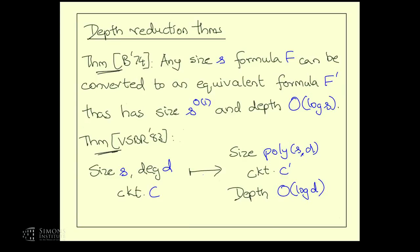There's an analogous theorem for circuits, due to Valiant, Skyum, Berkowitz, and Rackoff from the eighties. If you have a size-S circuit computing a degree-D polynomial, you can convert it into an equivalent circuit of size polynomial in S and D, and depth at most logarithmic in the degree parameter — so O(log D) with unbounded fan-in, or O(log S · log D) with bounded fan-in. These conversions are efficient.